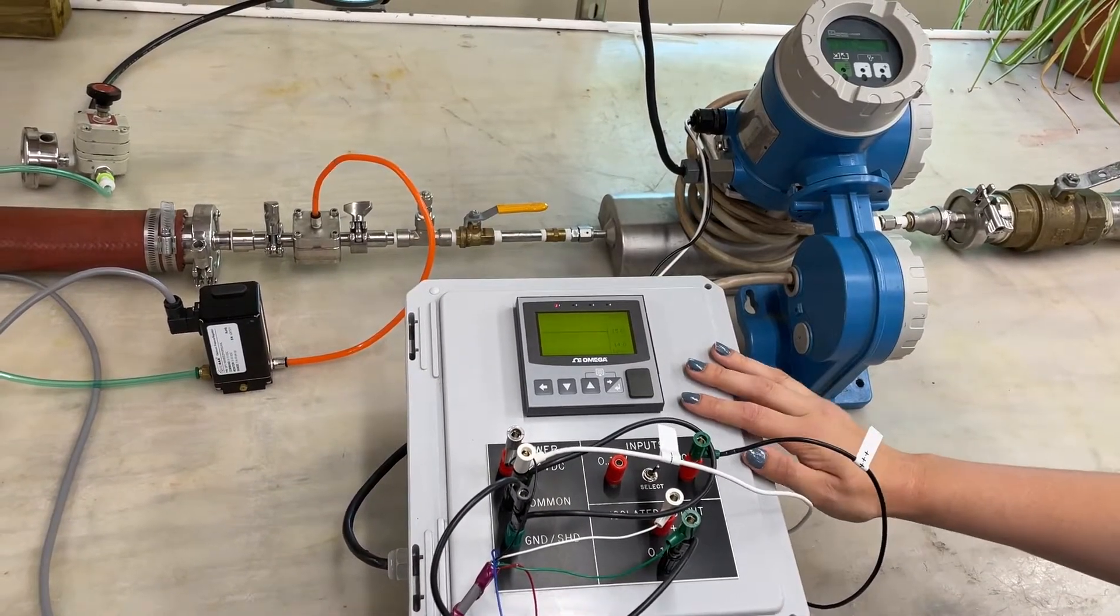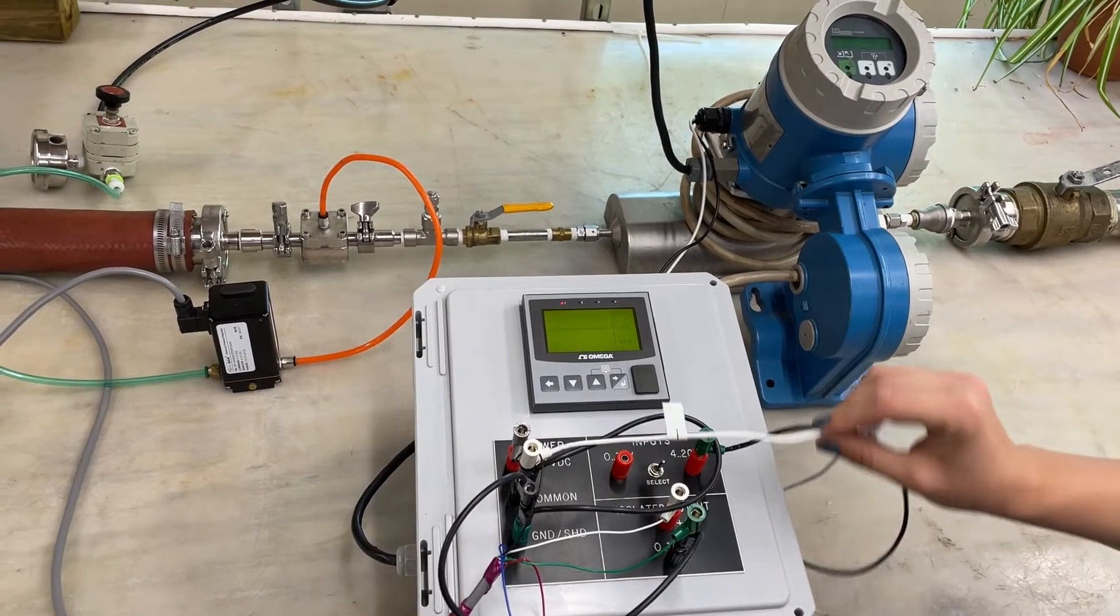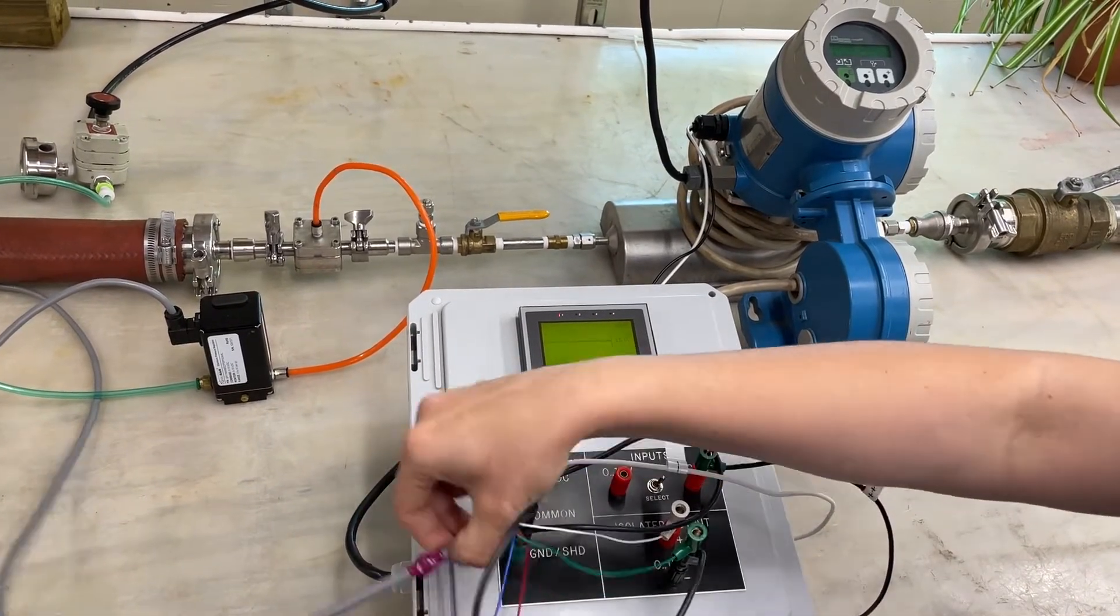Here is our Omega PLC. This is the signal coming in from the flow meter and then it comes out to drive the QPV.